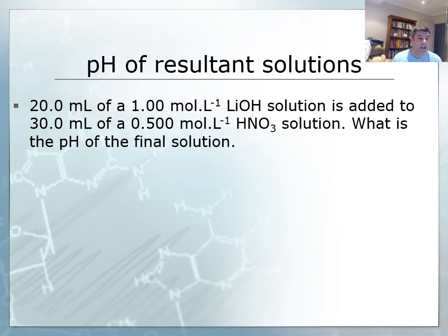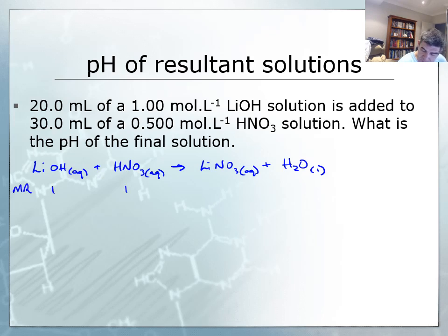The final question is the pH of resultant solutions when you mix two solutions together. We'll do the same thing as before, but need to be aware of whether there's a solution in excess or one that's a limiting agent. I've got lithium hydroxide reacting with nitric acid. We have lithium nitrate as our salt in solution and we form water. This equation is already balanced, so our mole ratios are 1 to 1 to 1 to 1.